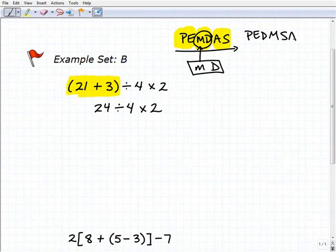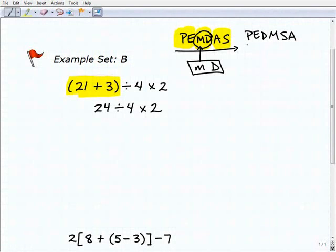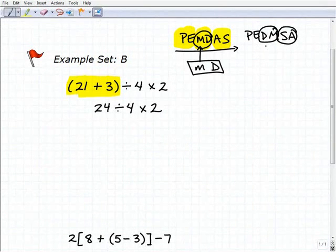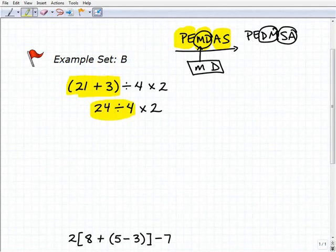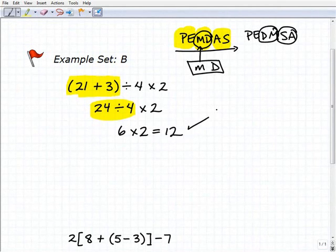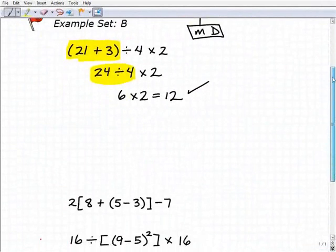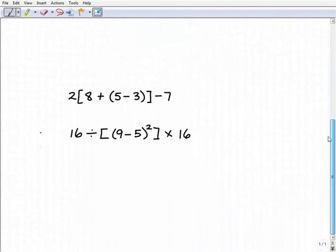You can even write PEMDAS switching the D and M, and the S and A, to make the point: multiplication/division or division/multiplication, whatever you see from left to right. In this case we see division first, so 24 ÷ 4 is of course 6, and I have 6 × 2, and that is 12.